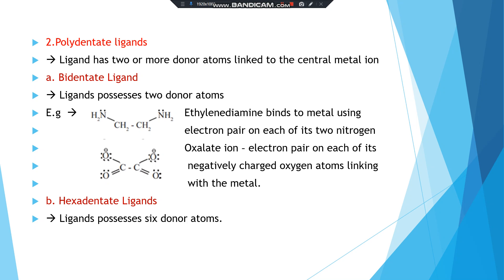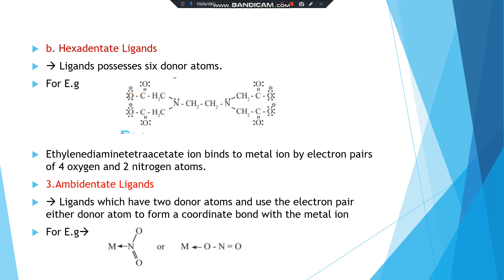Hexadentate ligands possess six donor atoms. For example, ethylenediaminetetraacetate ion — EDTA⁴⁻ — binds to a metal using the electron pairs of four oxygen atoms and two nitrogen atoms. It is a hexadentate ligand.